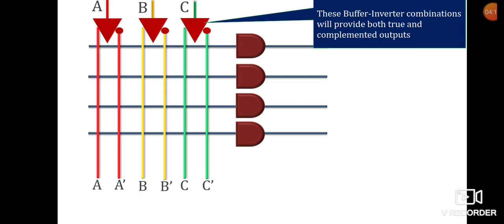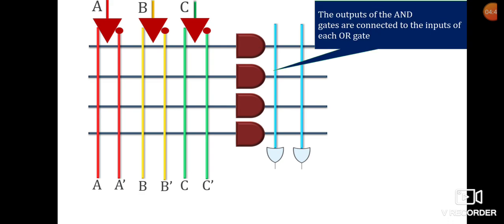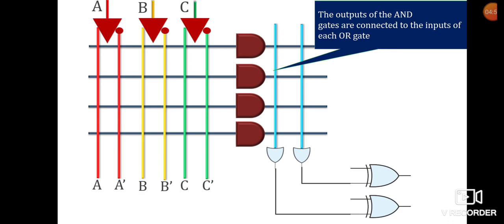There are AND gates connected via a mesh, and we can program this mesh according to our requirement. Each input and its complement are connected to the input of each AND gate, allowing us to generate any product term. The outputs of AND gates are connected with OR gates, and by making appropriate connections we can perform OR operations on any of the product terms. Some descriptions also include XOR gates, though they are not always shown.